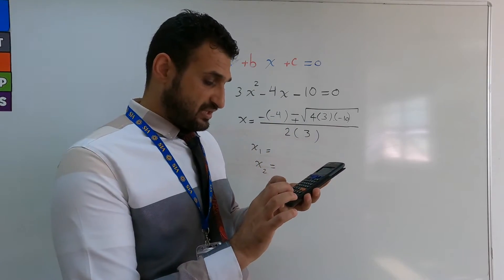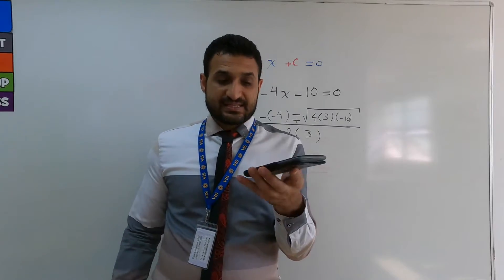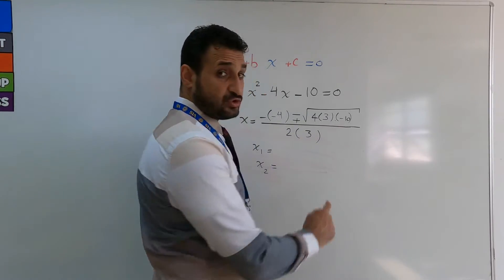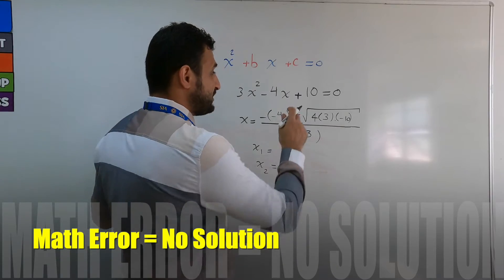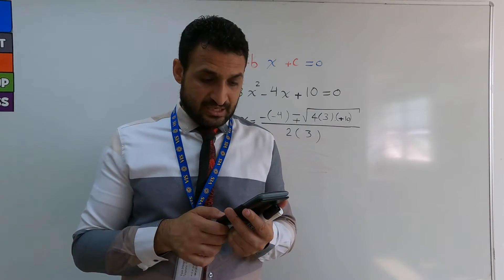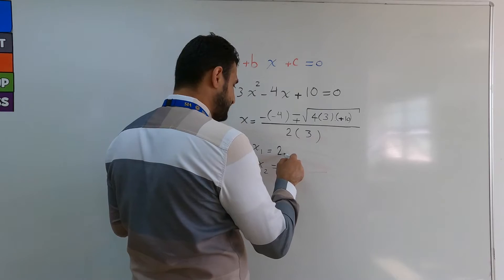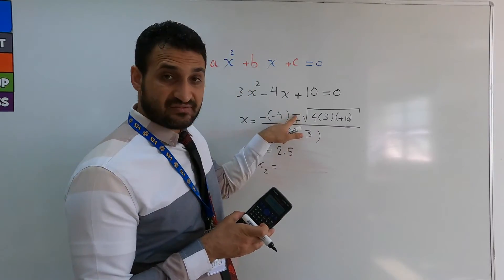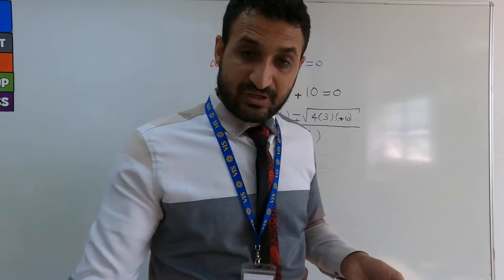In this case the calculator gives a math error, which means there is no solution — just write 'no solution'. If we change c to positive 10 instead, recalculating gives: with the plus root, x = 2.5; and with the minus root, x = negative 1.15. So there are two answers.